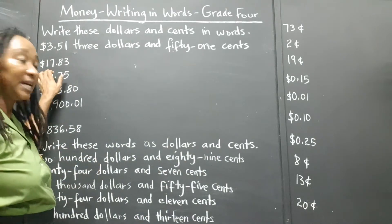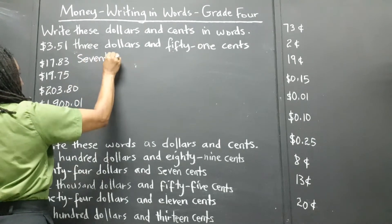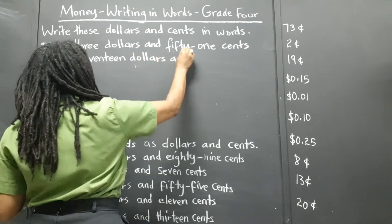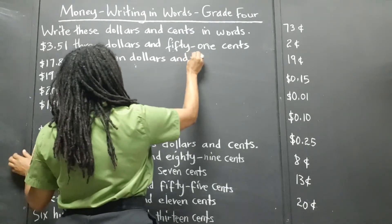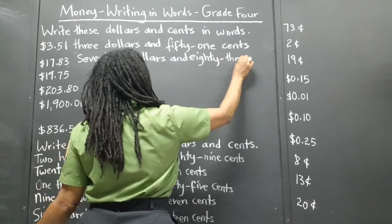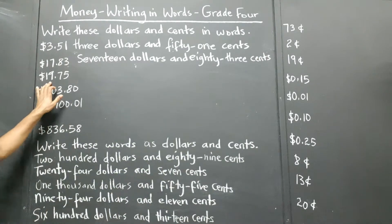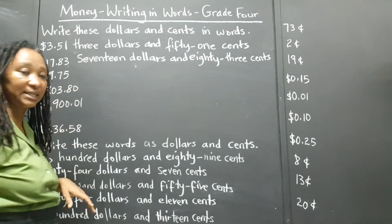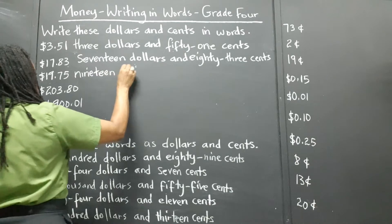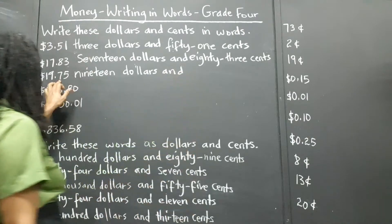Seventeen dollars and eighty-three cents — so that's seventeen dollars and eighty-three cents. Nineteen dollars and seventy-five cents — nineteen dollars and seventy-five cents.